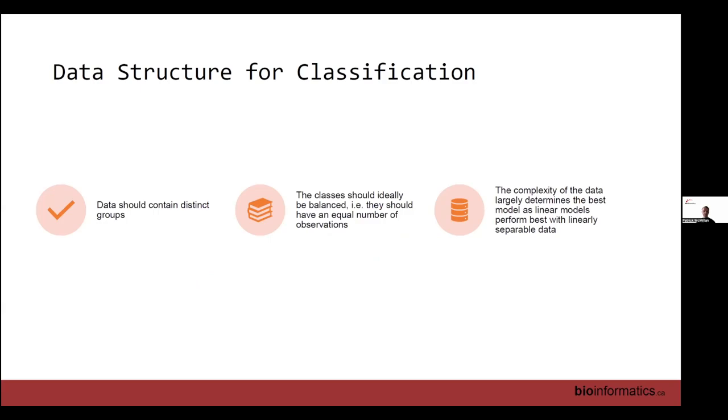So the typical type of data structure you want for classification is, well, the data needs to contain some kind of distinct groups. So if you don't have explanatory variables that are good at identifying which group the response belongs to, you're going to have a really tough time. So you have to understand how well do your explanatory variables explain the differences between the groups in your response variable. That's really going to drive how well does the model work for the data.